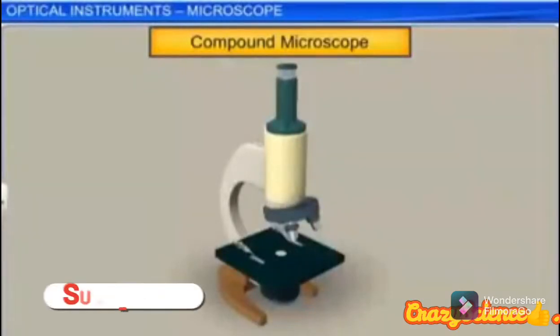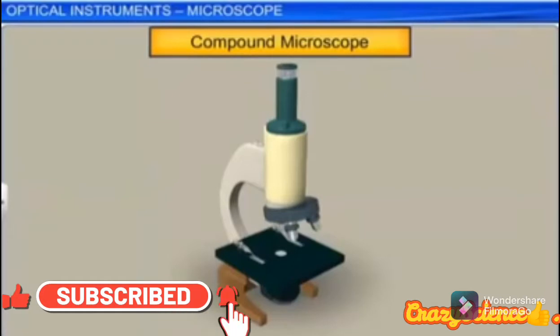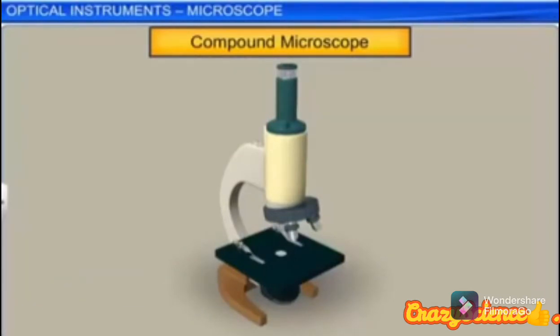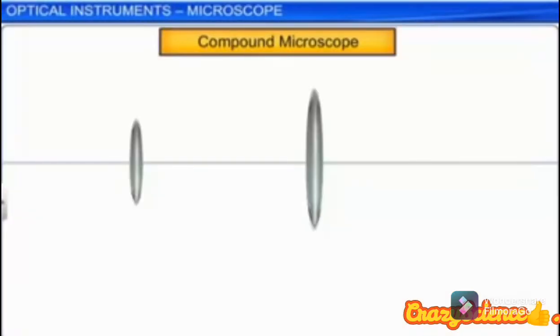When greater magnification is required to view microscopically smaller objects, a compound microscope is used. A compound microscope consists of two convex lenses arranged coaxially. The lens O that is close to the object is called the objective, and the lens E that is close to the eye is called the eyepiece.